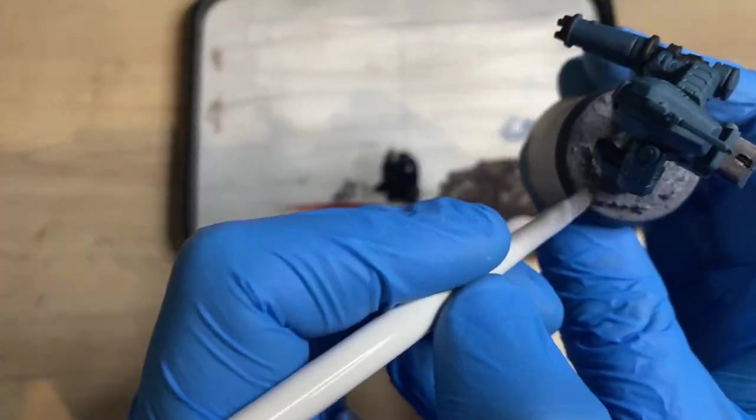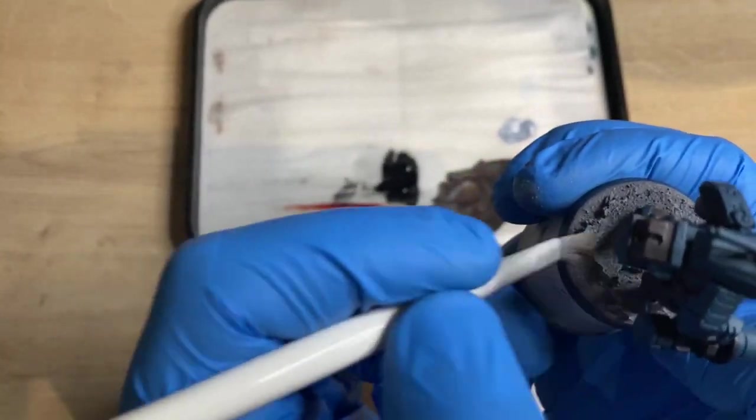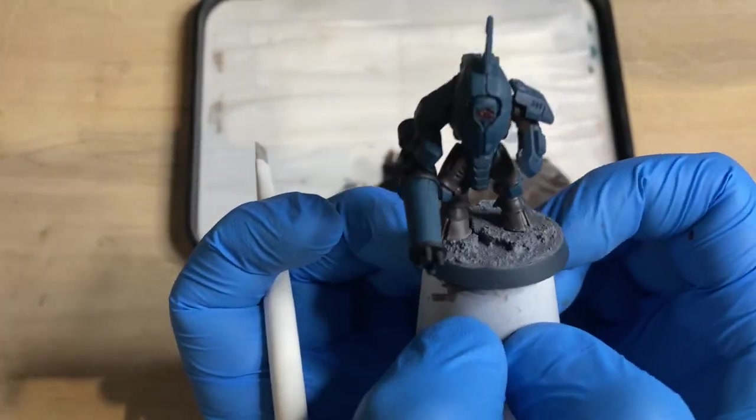Now what this is going to do is two things. It's going to accentuate the raised edges between that cork board and the surface, and it's also going to add like a layer of dust onto the Astrogranite debris grit itself.